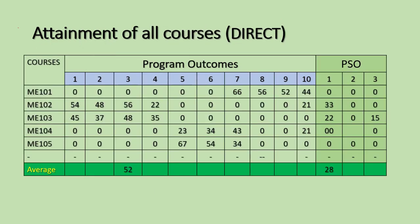The final table for all courses will list all course names along with the program outcomes and PSOs, and only the average attainment level will be considered. Finally, we get one average value. For example, PO3 may have an average attainment of 52% and PSO1 may have an average attainment of 28%. This gives attainment levels for all 10 POs and 3 PSOs.